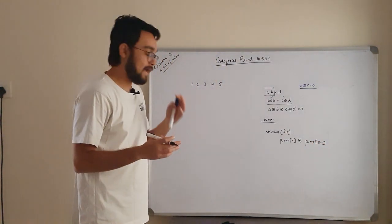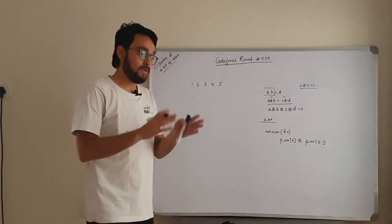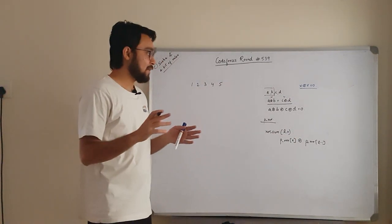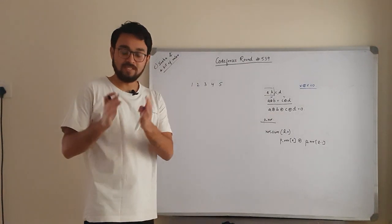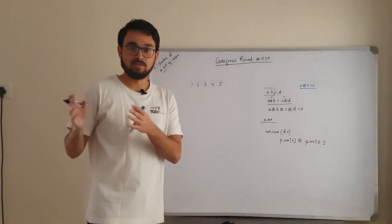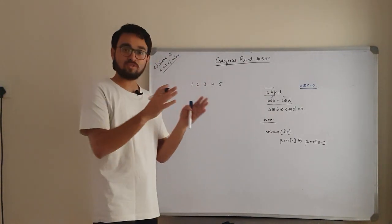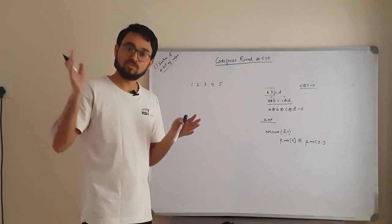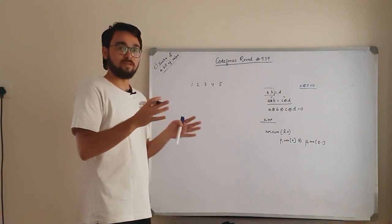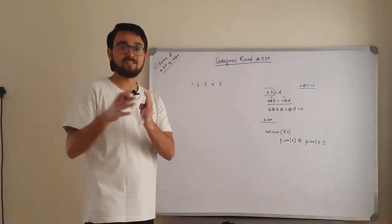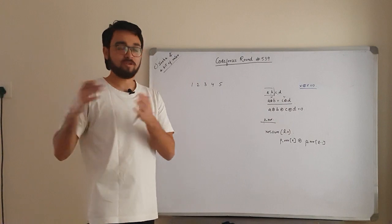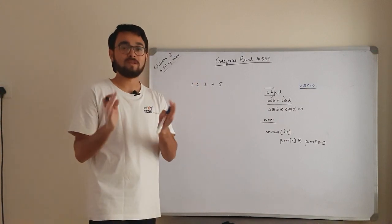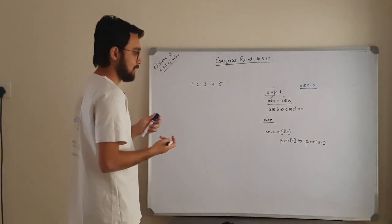For example, if you have the XOR of elements A, B, C, D, E and you want the XOR of C, D, E, you take the XOR sum of A, B, C, D, E and XOR it with A, B. The A's cancel and B's cancel, leaving you with C, D, E. That is the XOR prefix property.